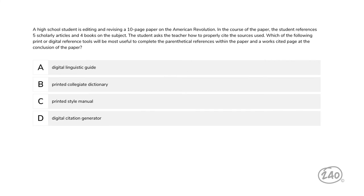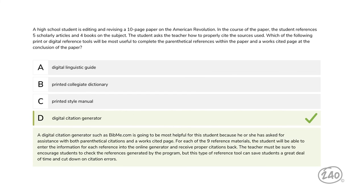Moving on to language use and vocabulary. A high school student is editing a 10-page paper on the American Revolution, referencing five scholarly articles and four books. The student asks how to properly cite sources. Which print or digital reference tool will be most useful for parenthetical references and a works cited page — a digital linguistic guide, printed collegiate dictionary, printed style manual, or digital citation generator? The answer is the digital citation generator — it'll help with both parenthetical citations and the works cited page. Of course, remind students to check the citations to be sure.